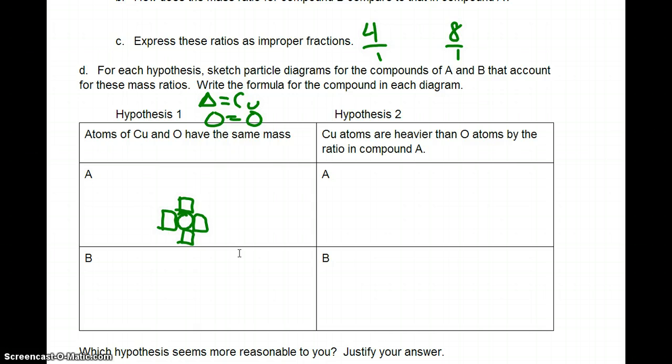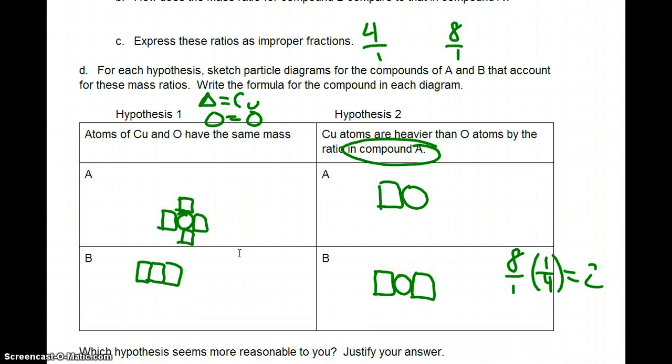And again, by the ratio in compound A, that would mean that we'd have CuO. And in the second one, we'd have 8 over 1 times 1 over 4. Again, because it's compound A, we'd have a 2 to 1 ratio. So we'd have 2 coppers to 1 oxygen. And over here, this would be 8 to 1. And I'm just drawing these kind of arbitrary, so you don't have to worry too much about that.